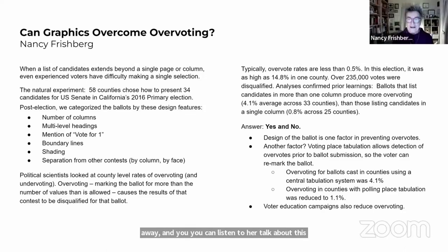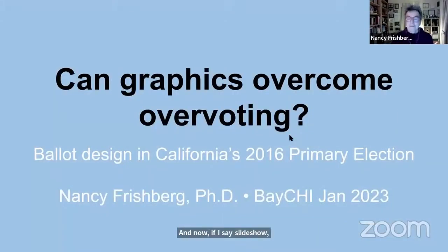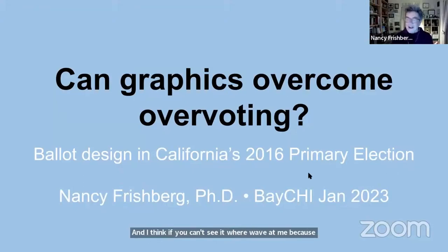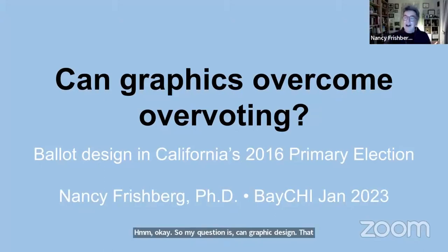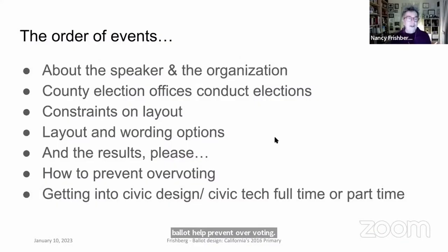Nancy shares her screen and begins her presentation. Her central question is: can graphic design — the insertion of certain features onto the ballot — help prevent overvoting? She outlines the agenda: introducing herself and the organization, explaining county election offices, discussing layout constraints, wording and layout options, election results, and how to prevent overvoting.